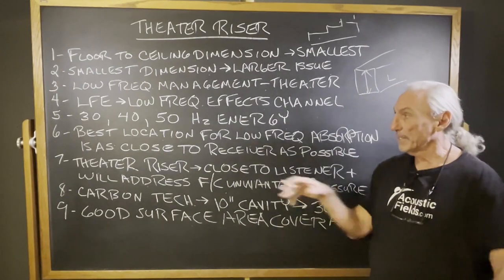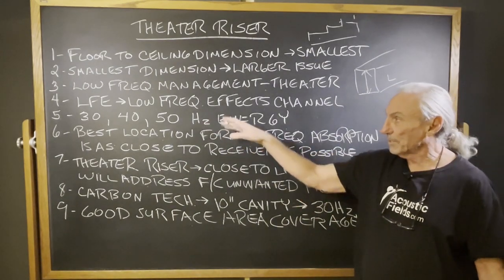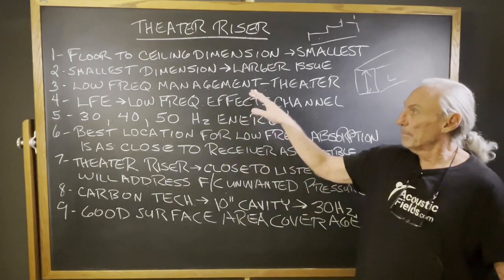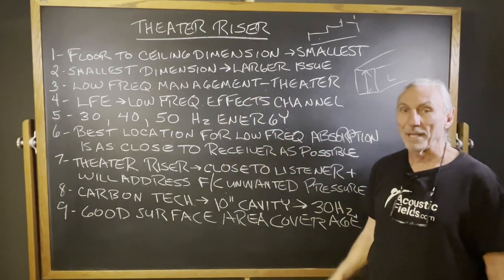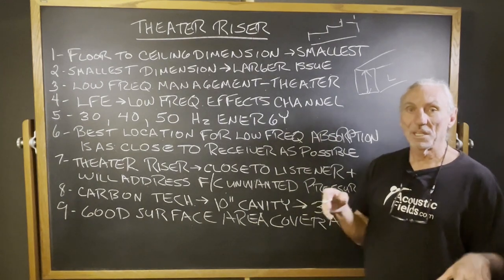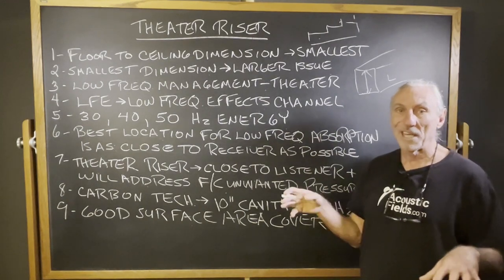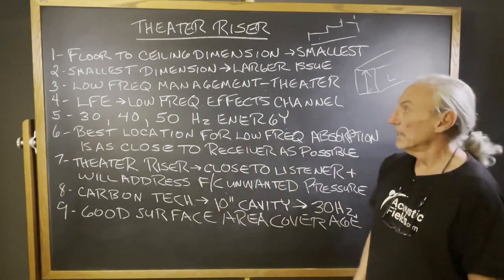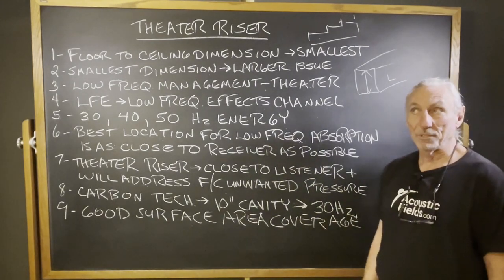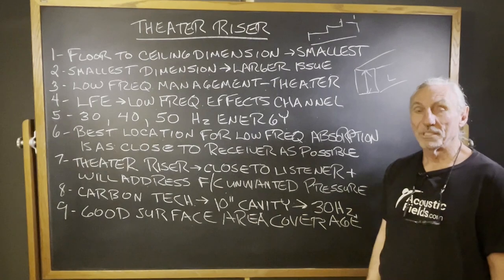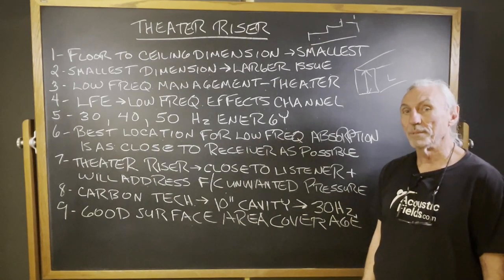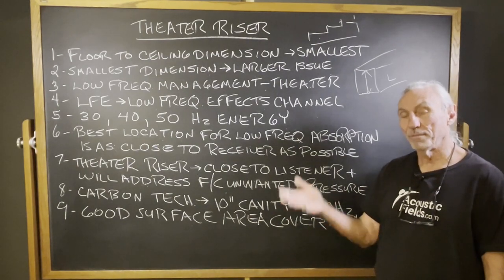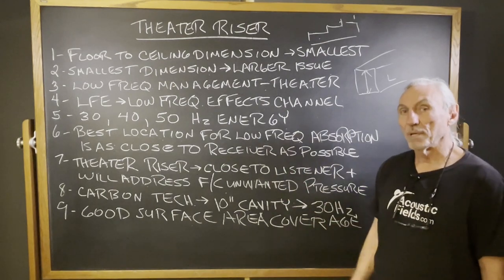That low frequency energy is usually in the 30, 40, 50 cycle range. But floor-to-ceiling height — at 8, 9, 10 feet — you're typically looking at 60, 70, 80 cycle problems. For example, I saw a seven and a half foot ceiling the other day and there was a 75 cycle problem. So 7.5 feet and a 75 cycle problem — there's probably a mathematical reason for all of that.